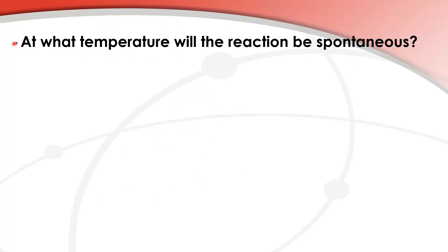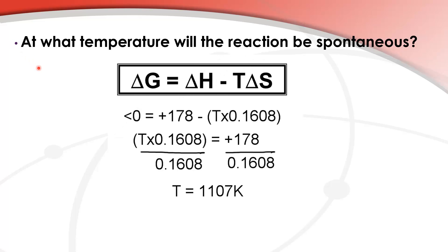The final question we can ask is: at what temperature will the reaction be spontaneous? For a spontaneous process, delta G must be negative, or less than zero. To find this temperature, rearrange the equation so that T times the change in entropy equals the change in enthalpy, then divide both sides by the change in entropy (0.1608), giving T = 1,107 K. So the reaction will be spontaneous at a temperature of 1,107 K or above.